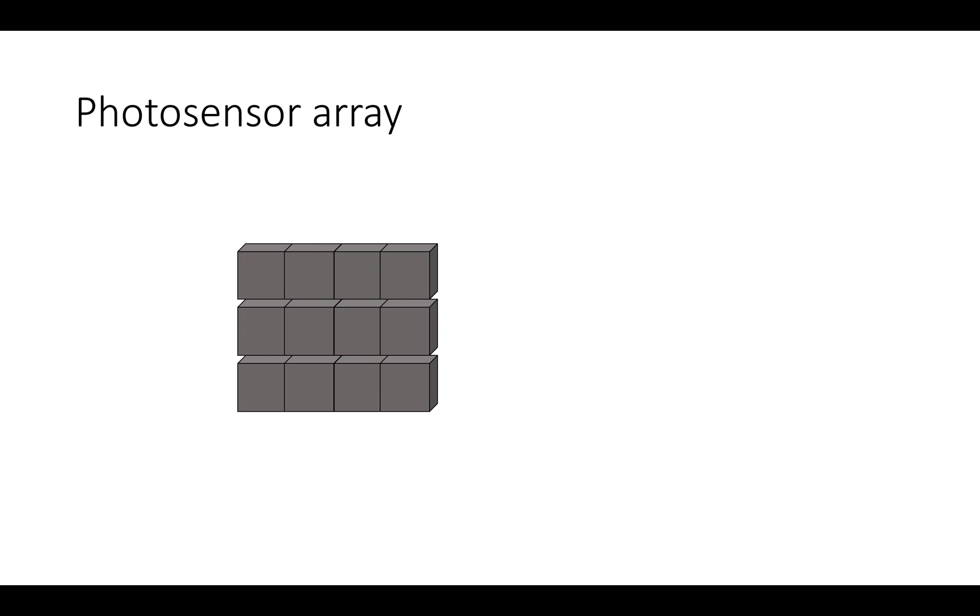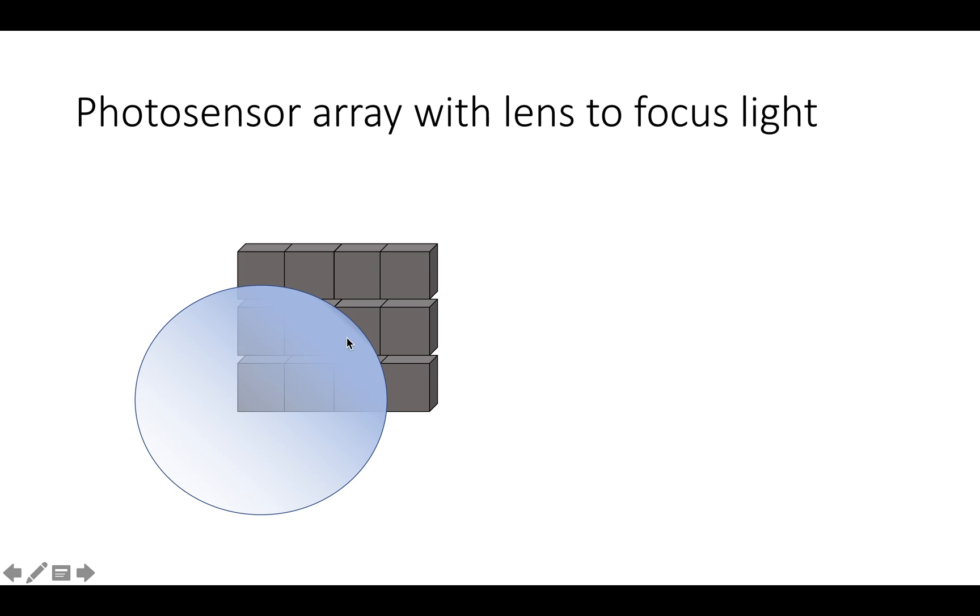And the idea behind a digital camera is really that you can take your photosensors and stack them up into a gigantic array, arrange them in a square in space on a big photosensing plate, effectively. And that by taking this sort of 2D array of photosensors and putting a lens in front of it to focus light, you can build a camera.